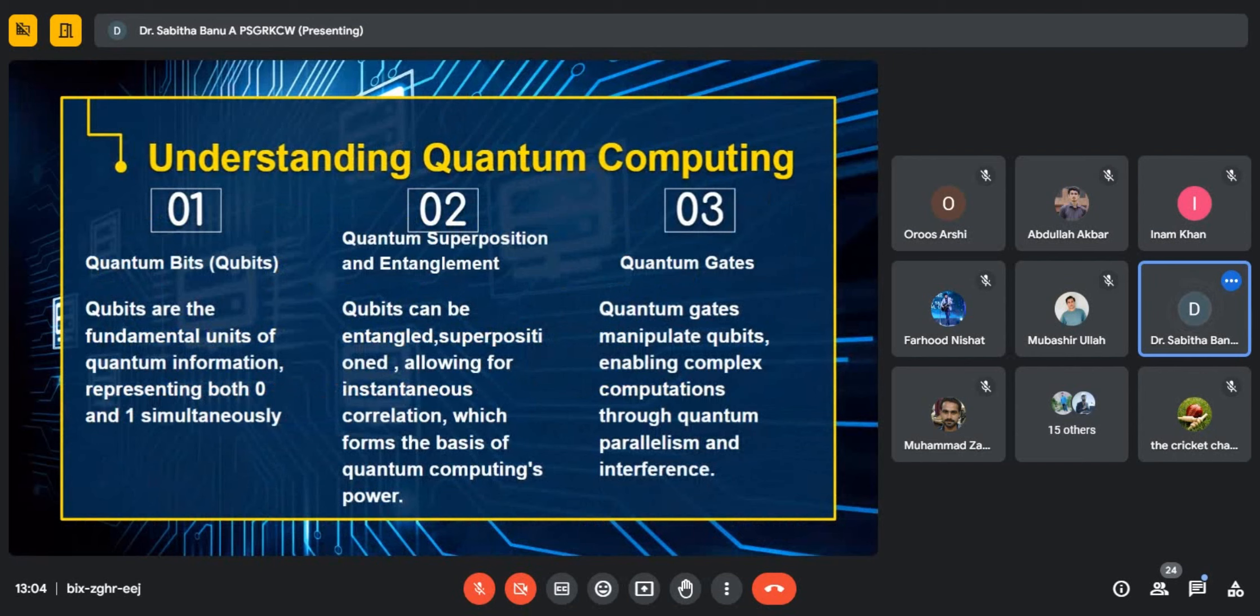Talking about quantum computing, it is a concept of quantum mechanics or quantum physics integrated with computer science to solve particular problems. Normally in traditional computing, we solve problems based on zeros and ones, which means to turn on or off. But in quantum computing, instead of traditional bits, we use qubits.